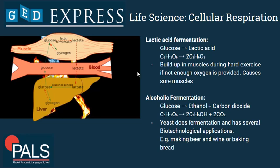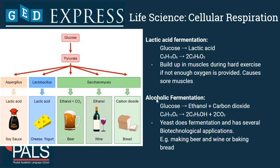Glucose then can be used in aerobic respiration to release a much greater amount of energy. Another form is alcoholic fermentation. In this case, glucose is broken down into ethanol and carbon dioxide. This process is done by yeast — one of the most famous molds of fungi, saccharomyces.